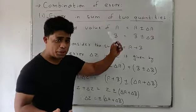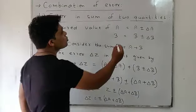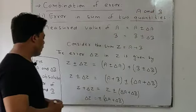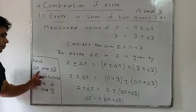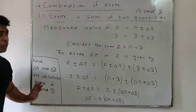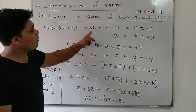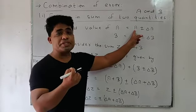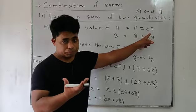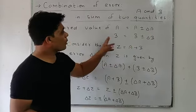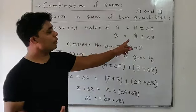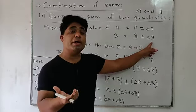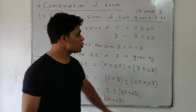Error in sum of two quantities: let a and b be two physical quantities, and delta a and delta b are the absolute errors of a and b respectively. The measured value of a is written as a plus-minus delta a, and the measured value of b is b plus-minus delta b.